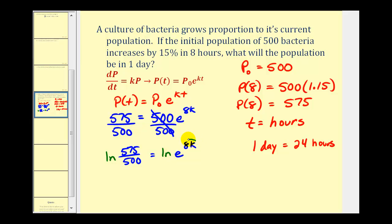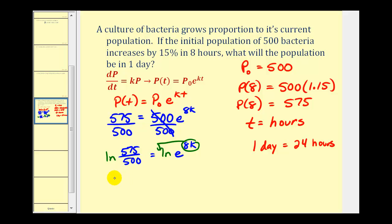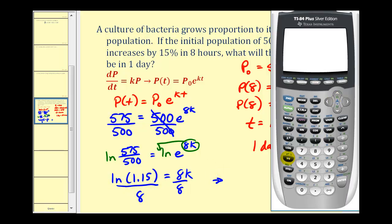Now we can move this exponent to the front. This quotient here is just 1.15. On the right side we have 8k times natural log e, but natural log e equals one. So now we just divide both sides by eight. This will give us our growth rate. We'll use the first five decimal places, so the growth rate is 0.01747.